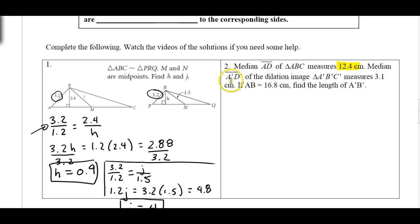We've got the median of segment A prime D prime in the dilation image, which is 3.1 centimeters. They're also telling us that AB is 16.8, and we want to find the length of A prime B prime.